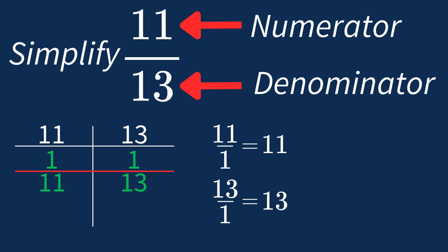So after dividing both the numerator and denominator by their greatest common factor of 1, we end up with the same fraction, 11 over 13. This shows us that 11 over 13 is already in its simplest form. There's no larger number that can divide both parts evenly.